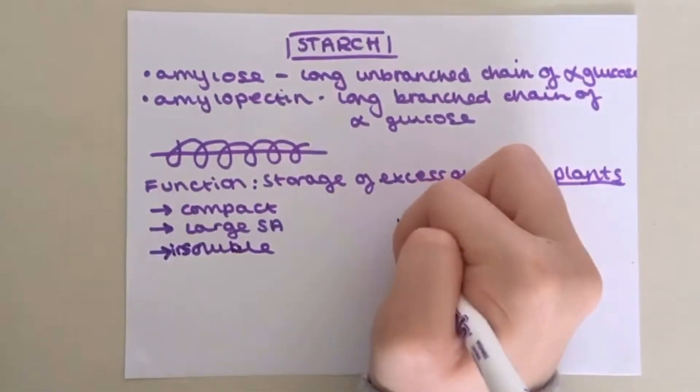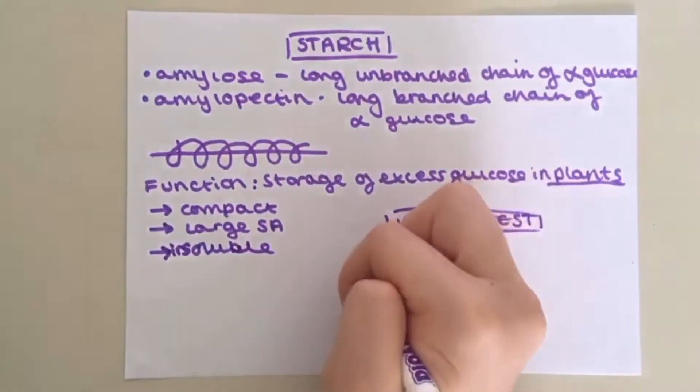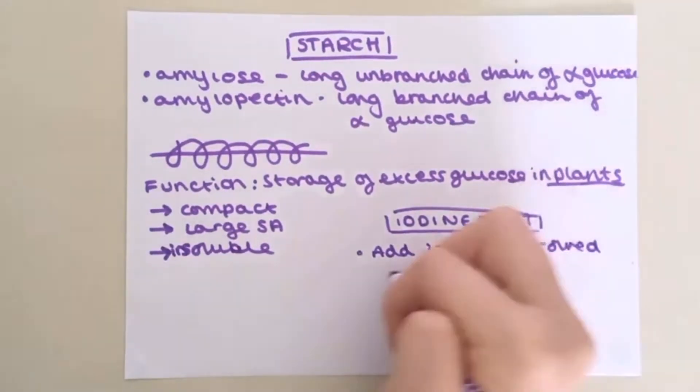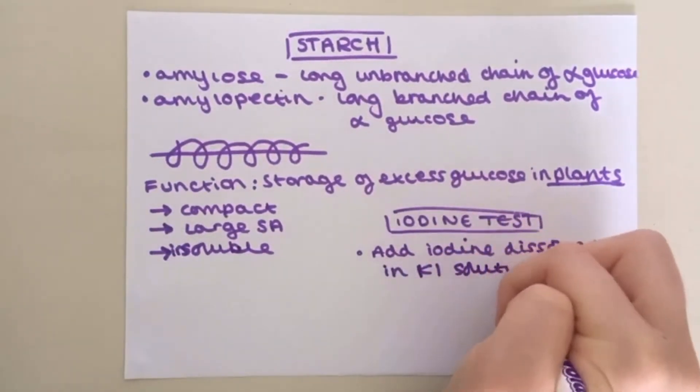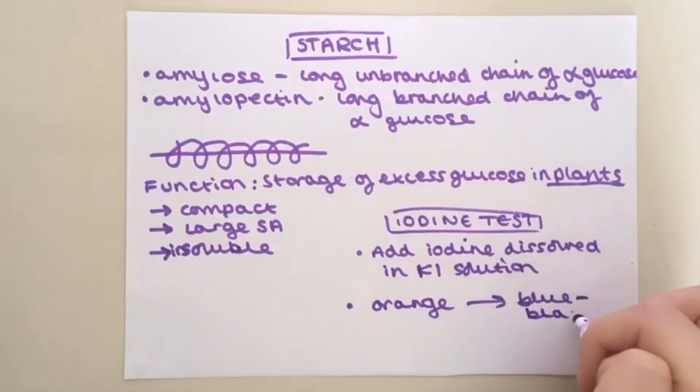The iodine test can be used to detect the presence of starch. Add two drops of iodine dissolved in potassium iodide solution to a two centimetre cubed test sample and if starch is present there will be a colour change from orange to blue-black.